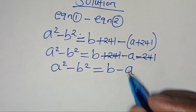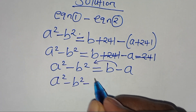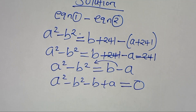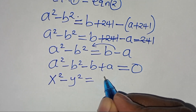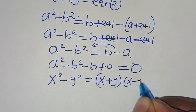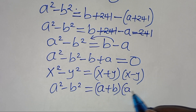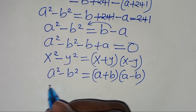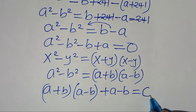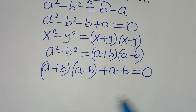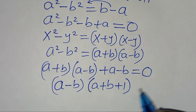Taking b minus a to the left hand side, we have a squared minus b squared minus b plus a equals 0. Now a squared minus b squared is a difference of two perfect squares: x squared minus y squared equals x plus y times x minus y. So a squared minus b squared equals a plus b times a minus b. This gives us a plus b times a minus b plus a minus b equals 0. Factoring out a minus b, we have a minus b times a plus b plus 1 equals 0.